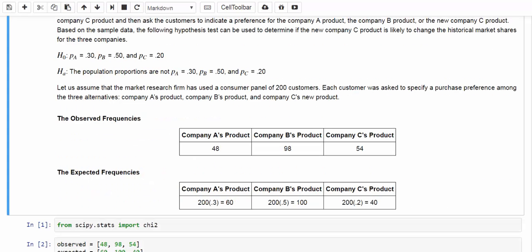The hypotheses are straightforward. Null hypothesis is that Pa is 30%, Pb is 50%, and Pc is 20%. The alternative hypothesis is that the population proportions are not 30% for A, 50% for B, or 20% for C.